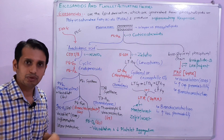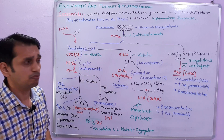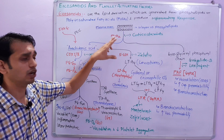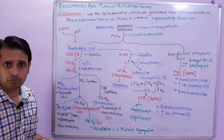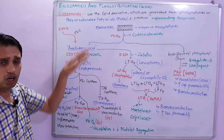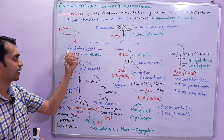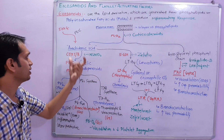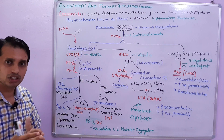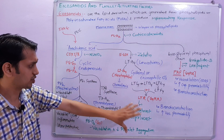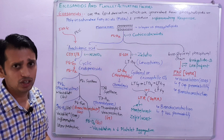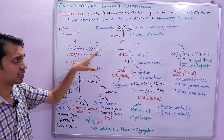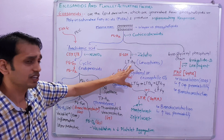Now come to the leukotrienes. These compounds are mainly formed from arachidonic acid. In the presence of phospholipase A2 enzyme, and then arachidonic acid is the main essential precursor for the synthesis of all these eicosanoids: leukotrienes, thromboxane, prostaglandins, and prostacyclins. In the presence of 5-LOX, means 5-lipoxygenase enzyme, arachidonic acid converts into LTA4, and further LTA4 converts into two types of leukotrienes.